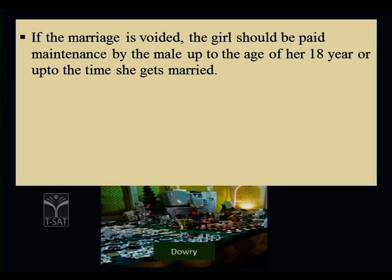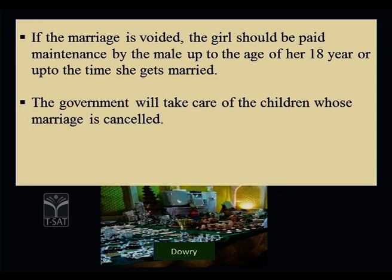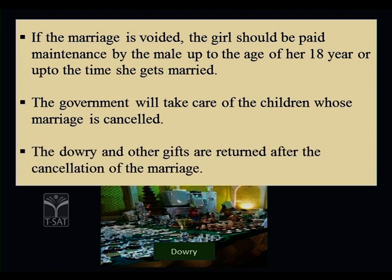If the marriage is voided after the consent authorities intervene, the girl should be paid maintenance up to the age of 18 years, or until she gets married, by the male who was entering into the contract of marriage. The government will take care of children whose marriages are cancelled. The dowry and other gifts provided by the girl's father during the time of marriage must be returned back to the father or to the girl child herself after the cancellation of the marriage.